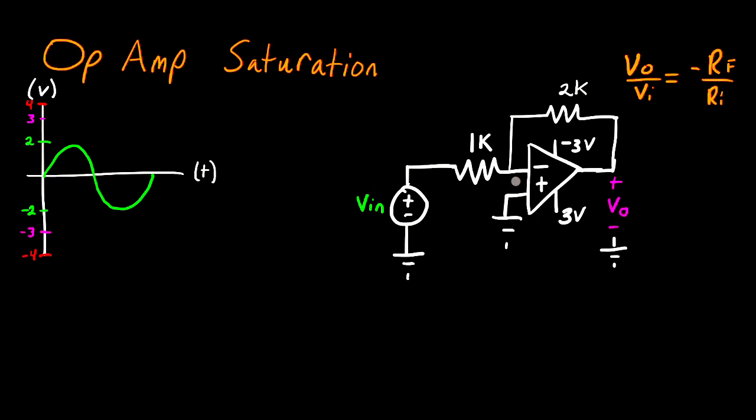In this video, we're going to be talking about op-amp saturation. Op-amp saturation is something that happens when you exceed the maximum or minimum voltages that the op-amp can output.